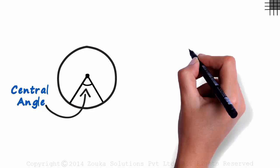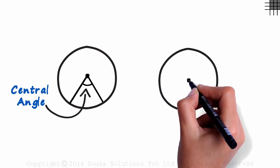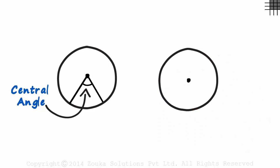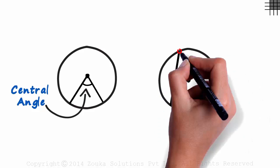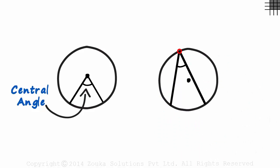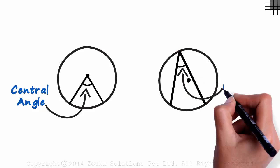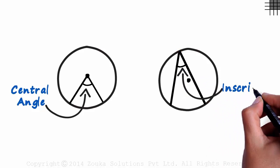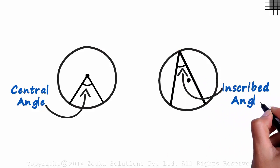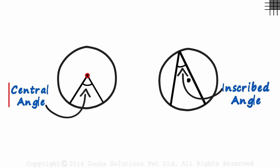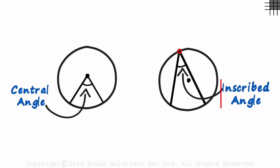The second type is an angle which has its vertex at the circumference of the circle. Such angles are called inscribed angles. Vertex at the center: central angle. Vertex on the circumference: inscribed angle.